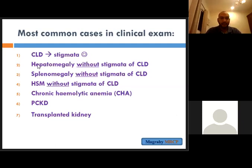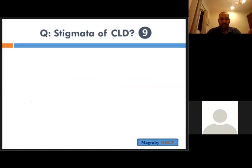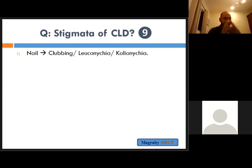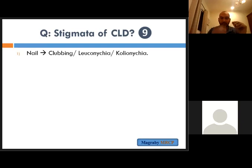Let's start by identifying what is meant by stigmata of chronic liver disease. Stigmata of chronic liver disease means that the patient has a cirrhotic liver and you can see specific signs indicating cirrhosis, such as the following — beginning with checking the hands of the patient.